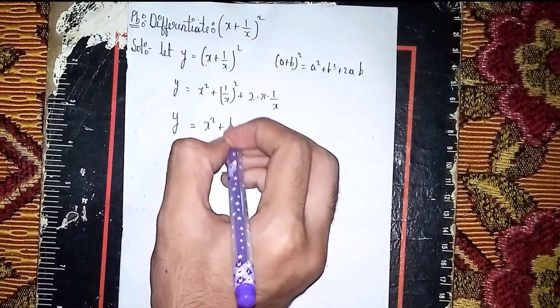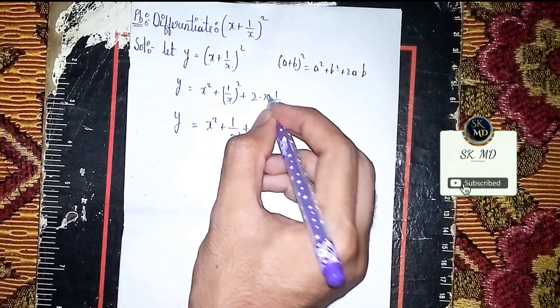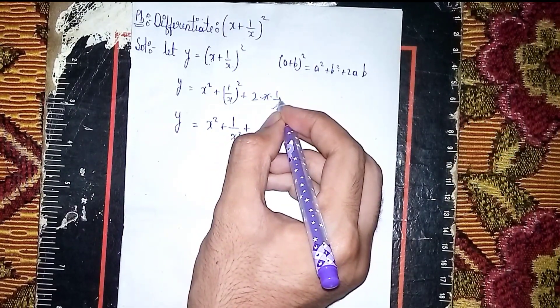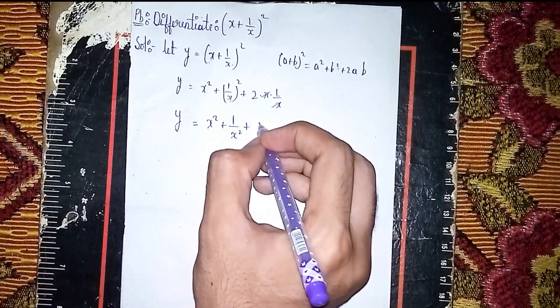So y equals x² plus 1/x². One squared is one only. Then plus, this x cancels with this x, so 2 times 1 is 2. So it becomes plus 2.